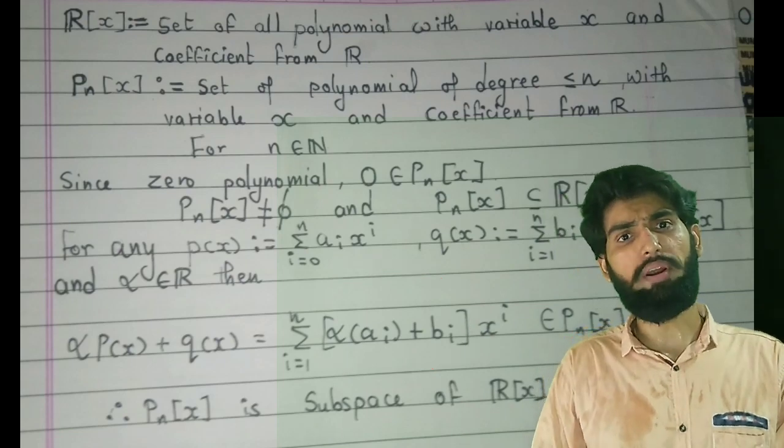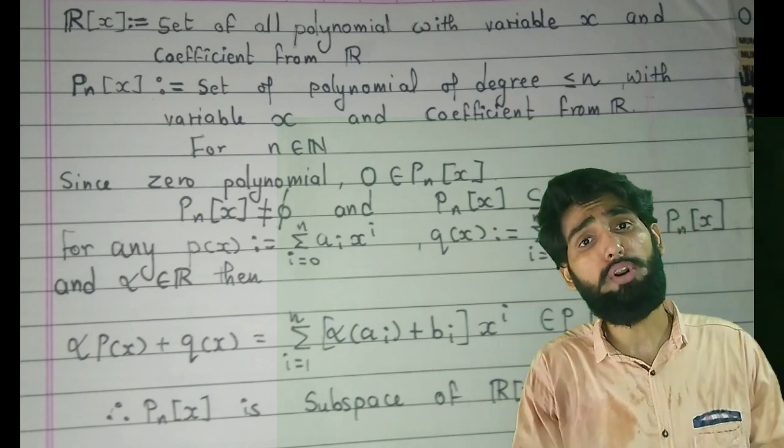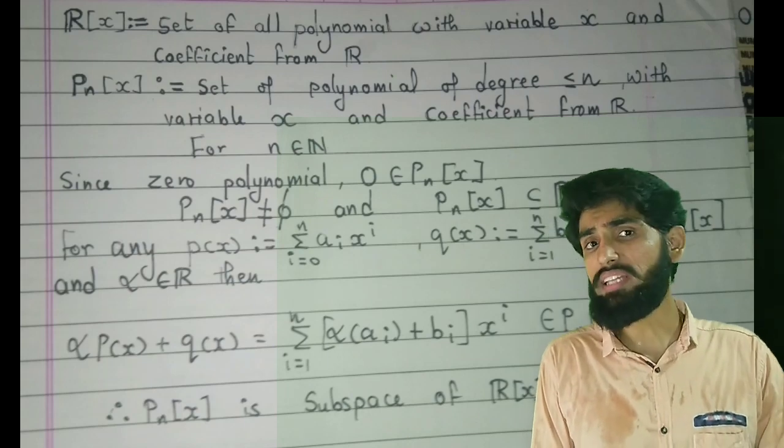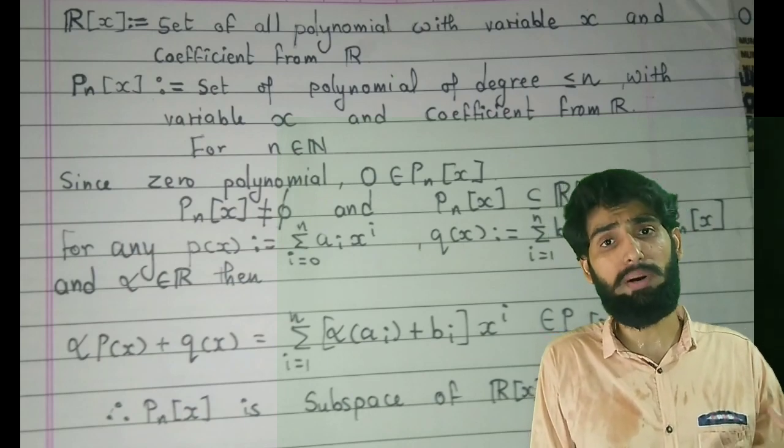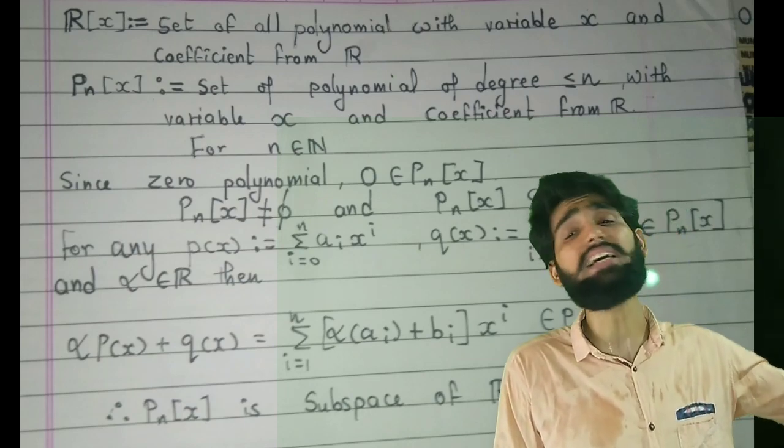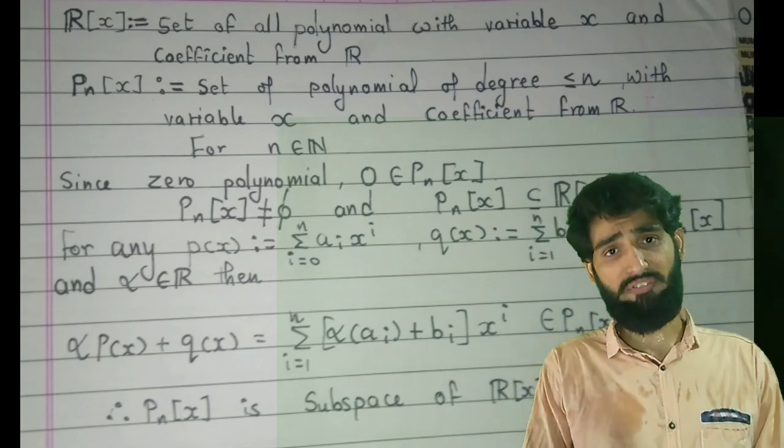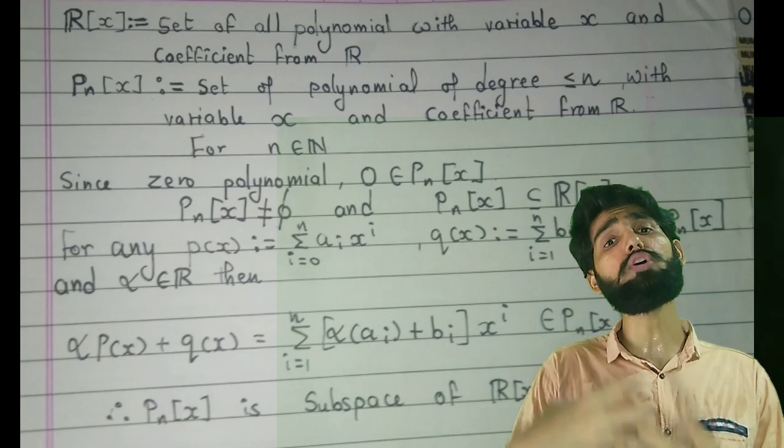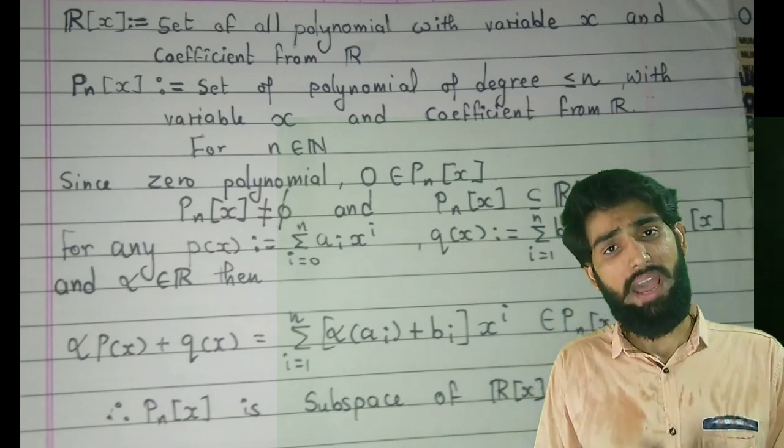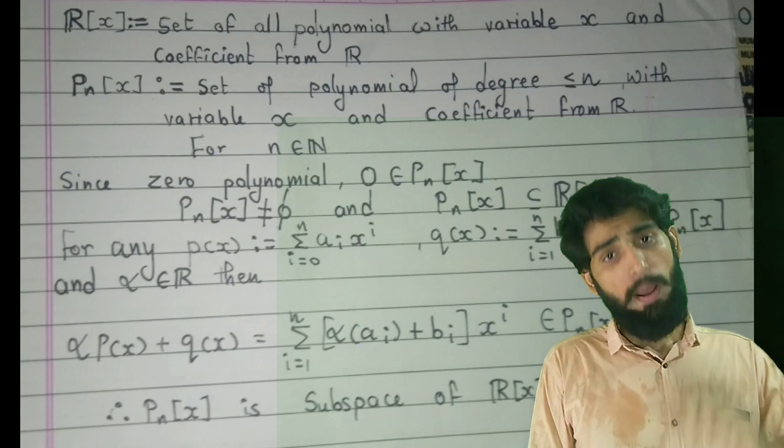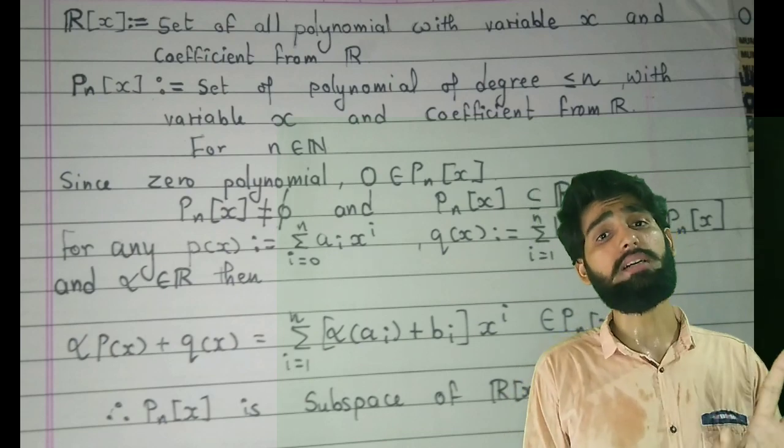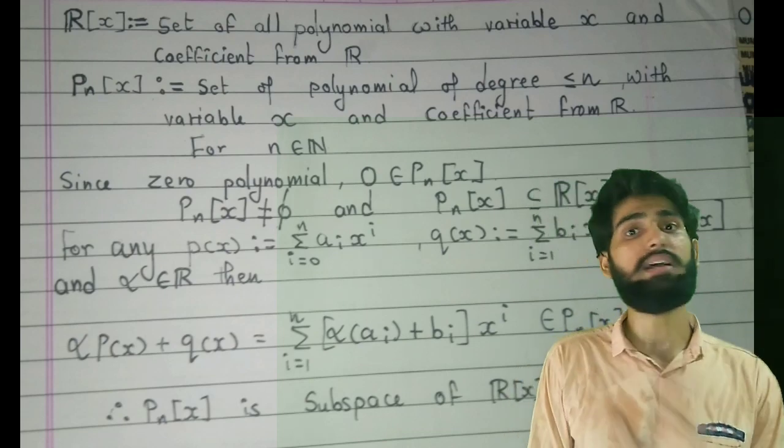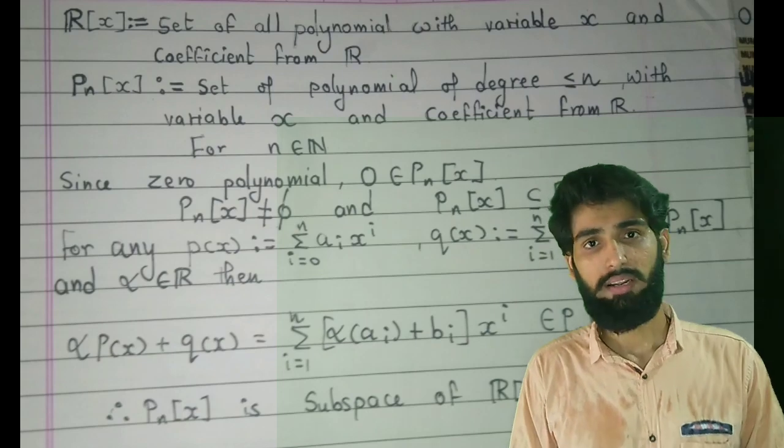It might be possible coefficient of x^(n-1) is also 0, it is fine. Since we wanted a polynomial of degree less than or equal to n, hence the coefficients become 0 is okay, but x is not exceeding the degree n. Hence after doing alpha p(x) plus q(x), the new polynomial, the new element is still inside P_n[x]. Hence we can say that my P_n[x] is a subspace of R[x] under that operation.